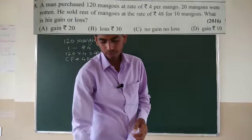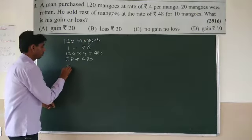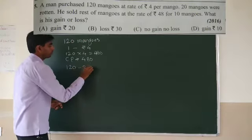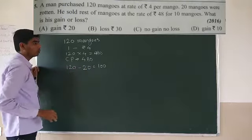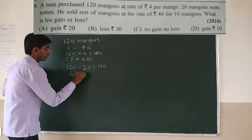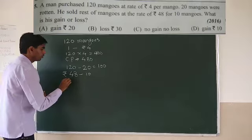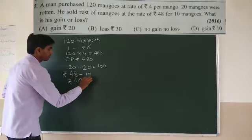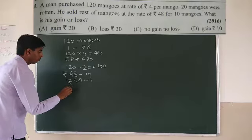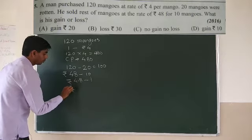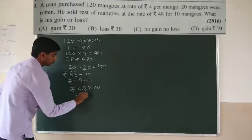20 mangoes were rotten. He sold the rest of the mangoes at Rs 48 for 10. Out of 120 mangoes, 20 were rotten, so only 100 mangoes remained. He sold 10 mangoes for Rs 48, so 1 mango for Rs 4.8. He had 100 mangoes, so multiply 4.8 by 100: selling price is Rs 480.